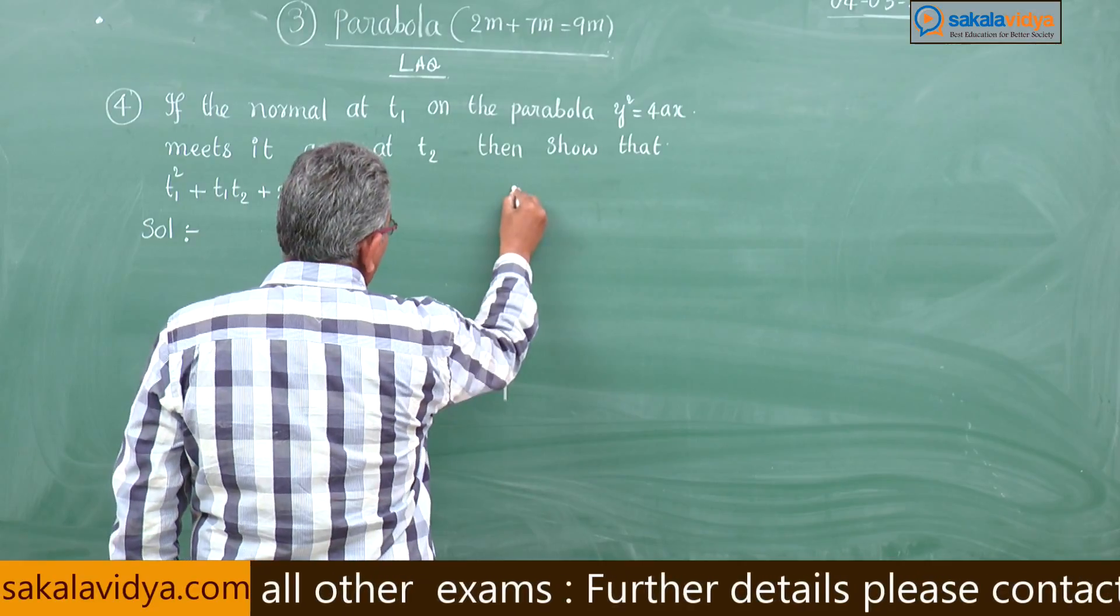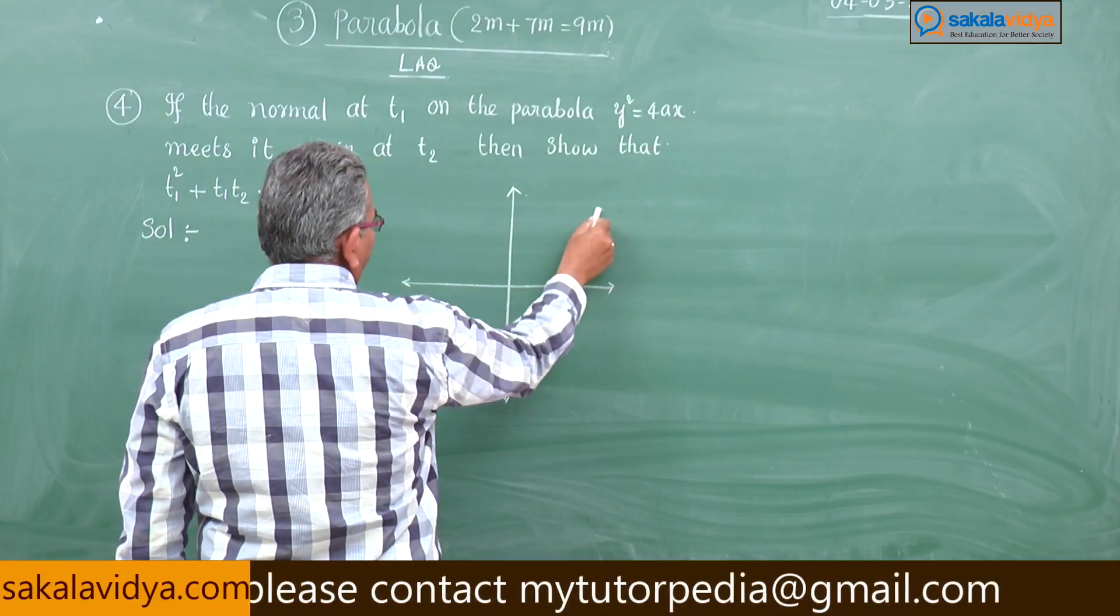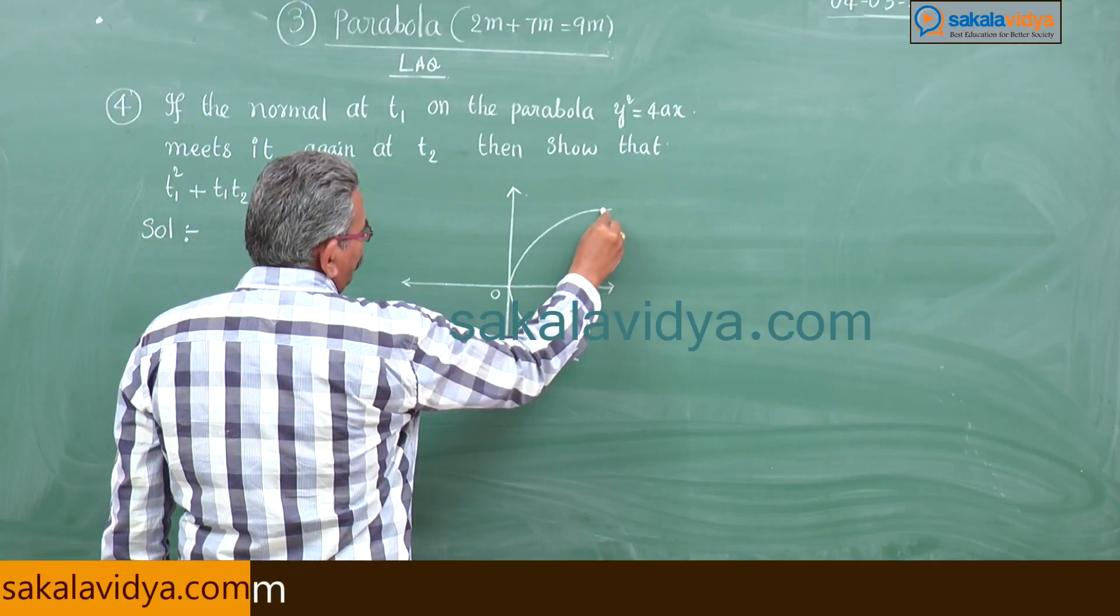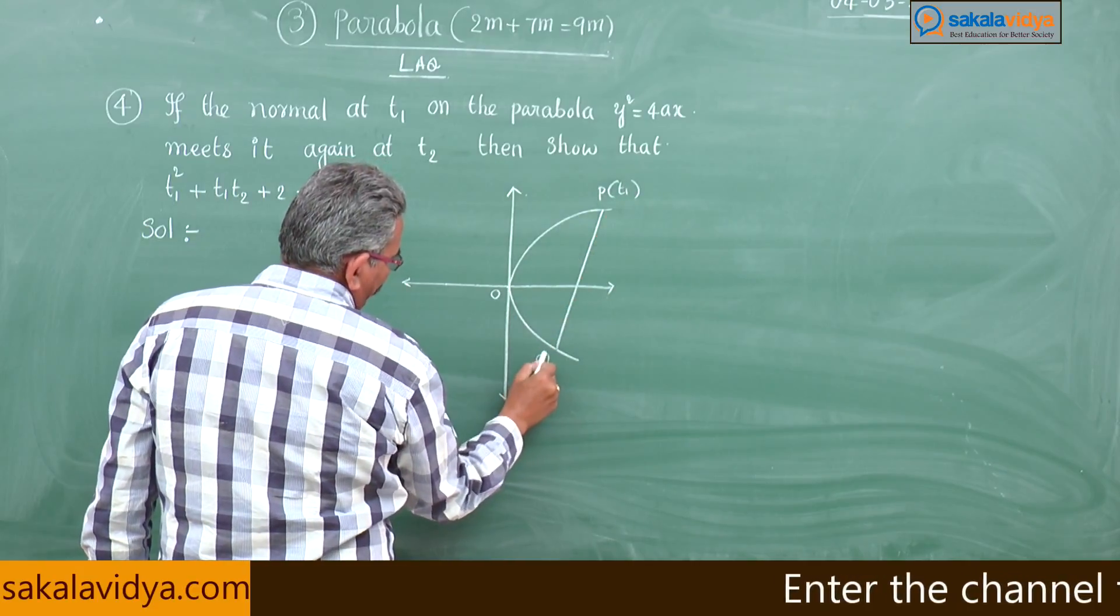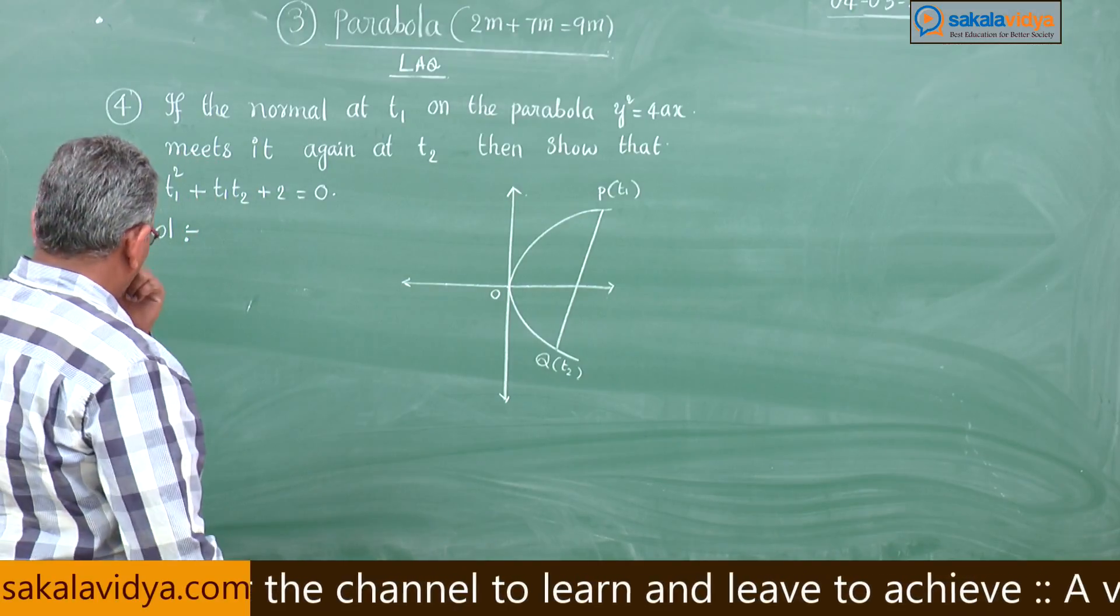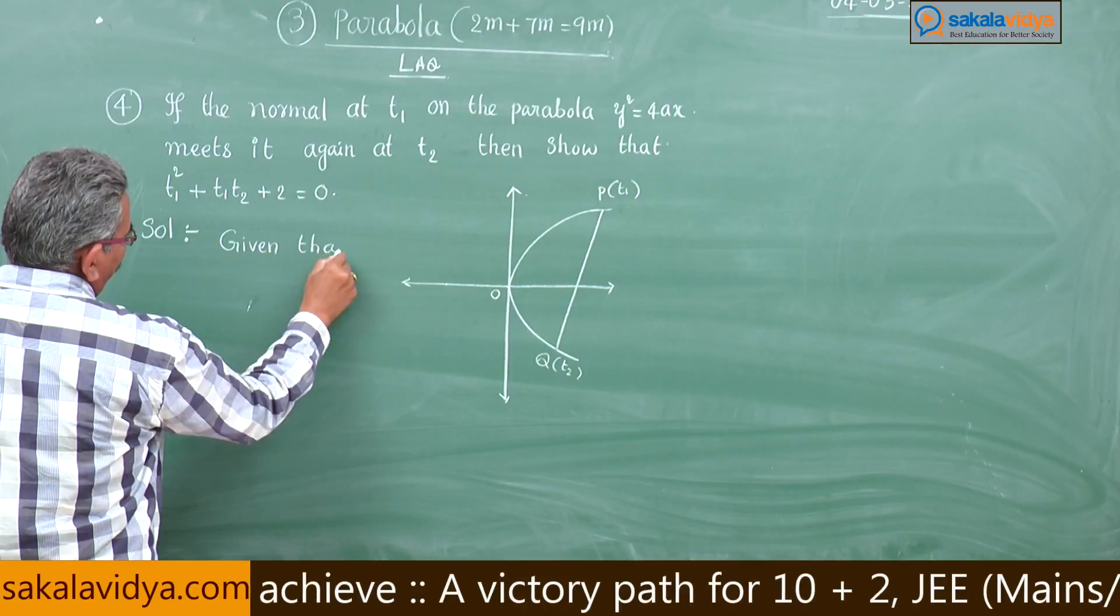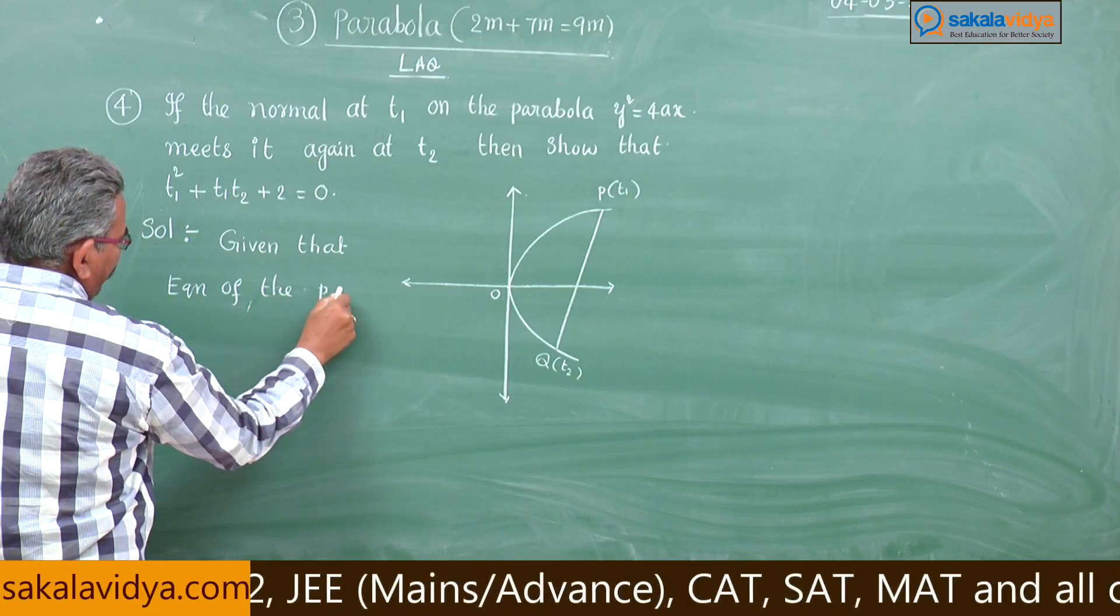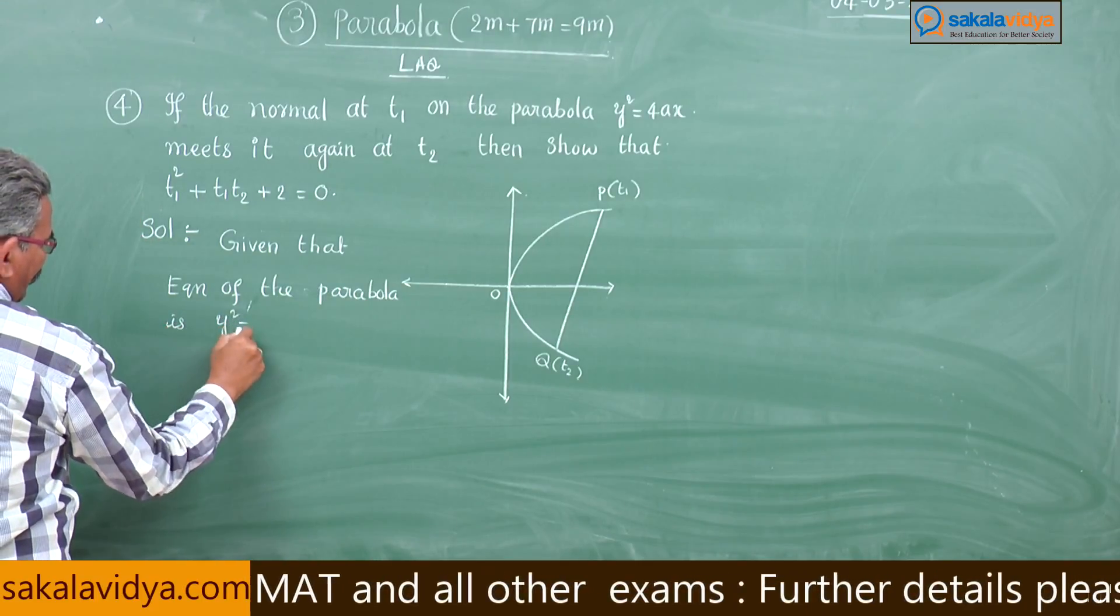So y squared is equal to 4ax. This is a right-handed parabola, this is the origin. Suppose you take two points, it is a chord. Say P of t1, this point is Q of t2. Given that the equation of the parabola is y squared is equal to 4ax.